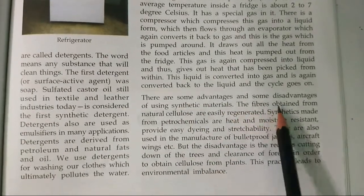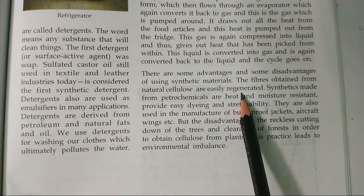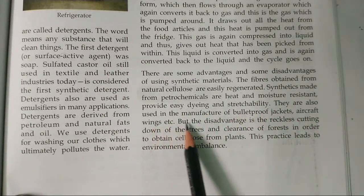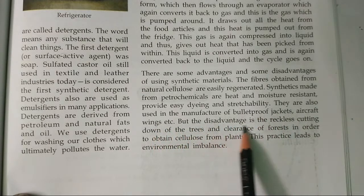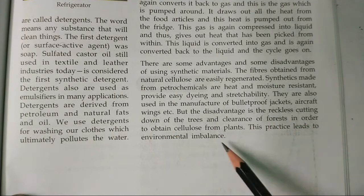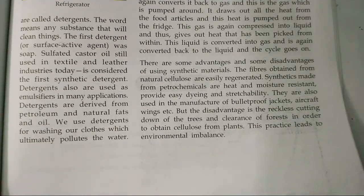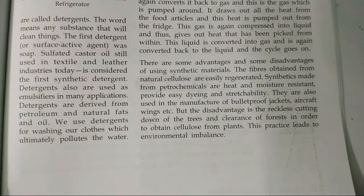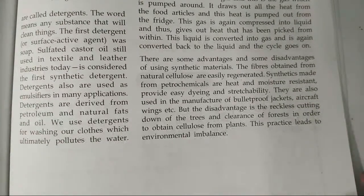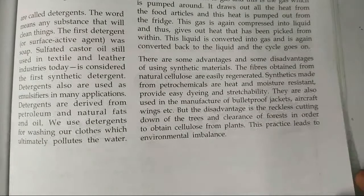There are some advantages and disadvantages of synthetic materials. Fibers obtained from natural cellulose are easily regenerated. Synthetic fibers are made from chemicals — they are heat and moisture resistant and are also used in making bulletproof jackets. However, the disadvantage is the reckless cutting down of trees and clearing of forests to obtain cellulose, which disrupts environmental balance. In this chapter, we studied the different synthetic resources, their advantages and disadvantages.